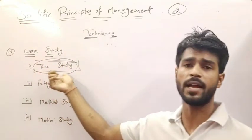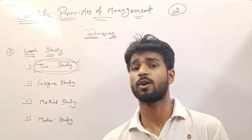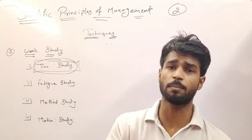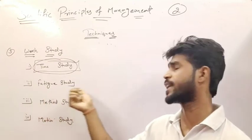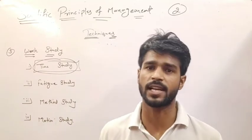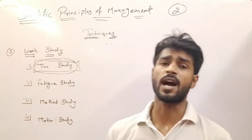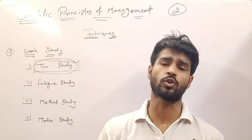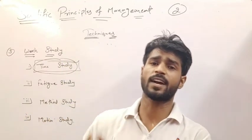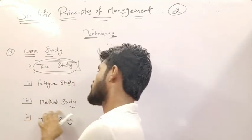Next is fatigue study. When you are doing your work continuously, you get tired. Fatigue study determines when you need a break, how many breaks to give, and how much time to allow for breaks — that is fatigue study. Third is method study. There are many methods to complete any work; in each method, cost and time are different. Method study determines which method gives less time, less cost, and greater efficiency.